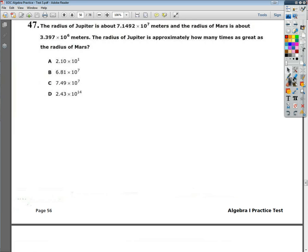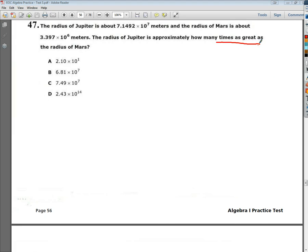Now, they're trying to play like a little bit of a shifty move here. The question has the word times in it, so your natural inclination is to multiply. But that's not really the question they're asking you. They're saying the radius of Jupiter is approximately how many times as great, which means it's sort of the opposite of multiplication in that it's division.